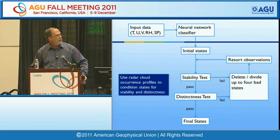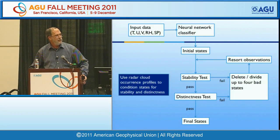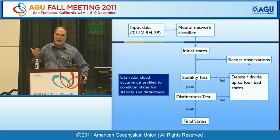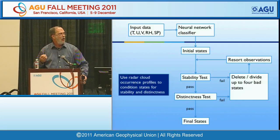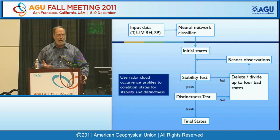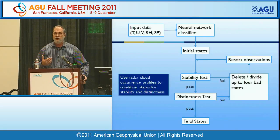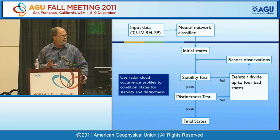We end up with a set of initial states. Then we go back and look at the radar profiles of cloud occurrence associated with each one of these snapshots, and use those cloud occurrences to ask whether the states we have found are stable. In other words, if we take the data set and subdivide it, do we get the same kinds of cloud profiles associated with the same dynamical patterns? And we ask whether they pass a distinctness test — each state should have a distinct cloud profile.